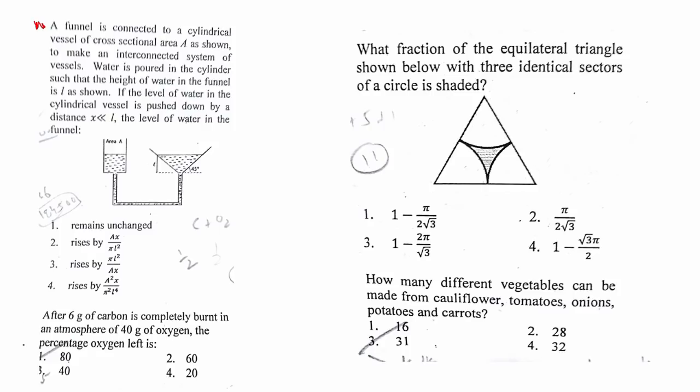For this question, after 6 grams of carbon is completely burnt, 80 percent amount of oxygen is left. For this shaded area question, the answer is 1 minus pi by 2 root 3.